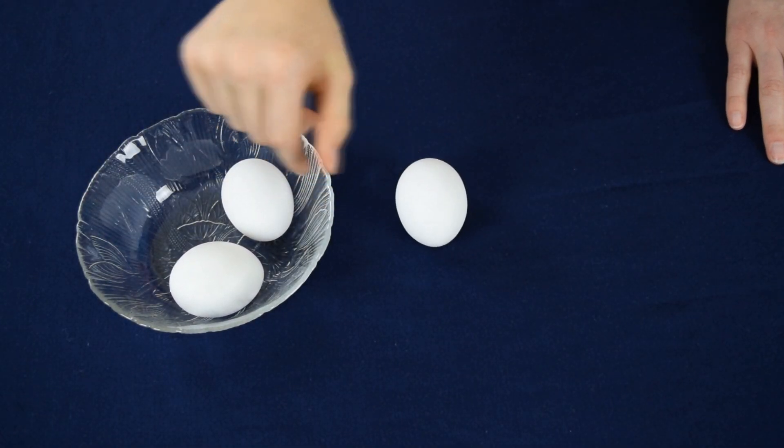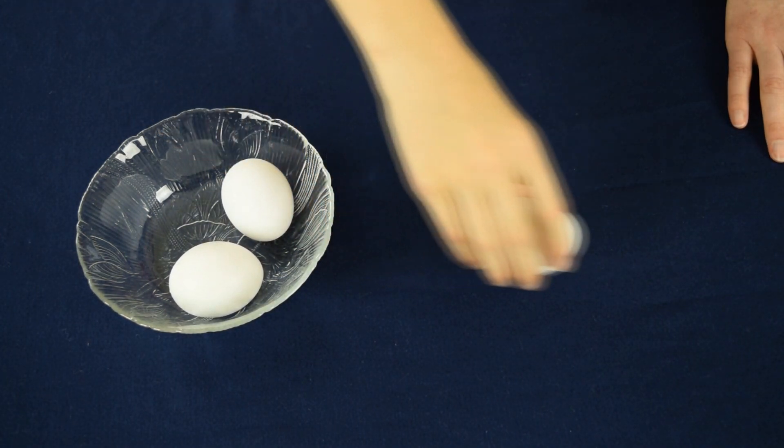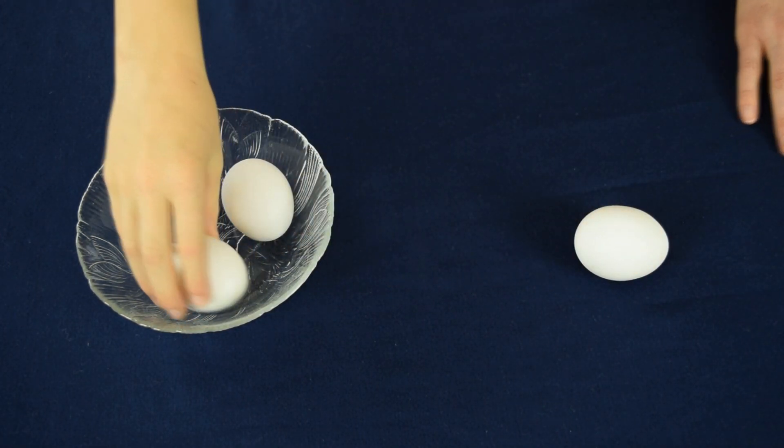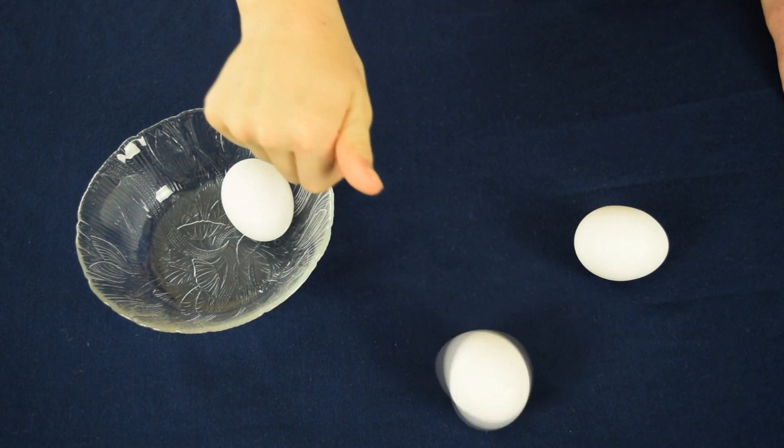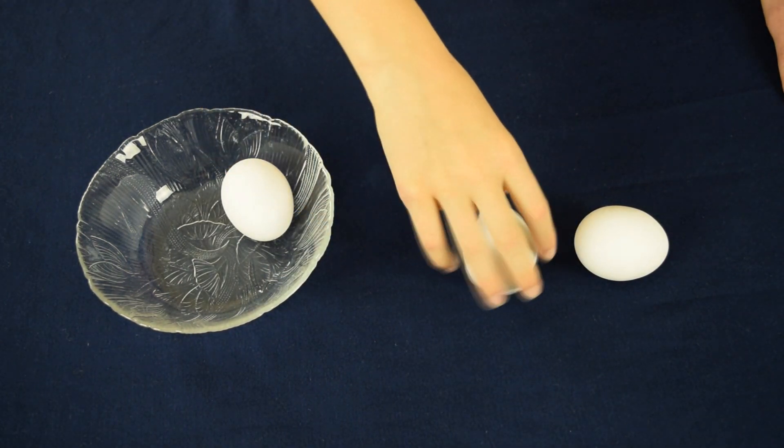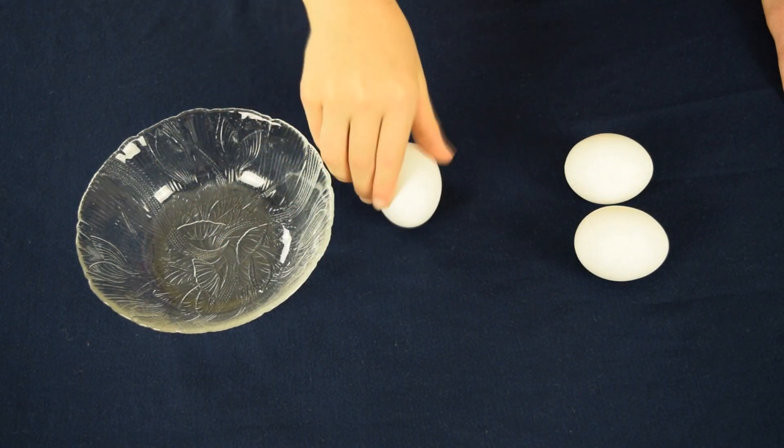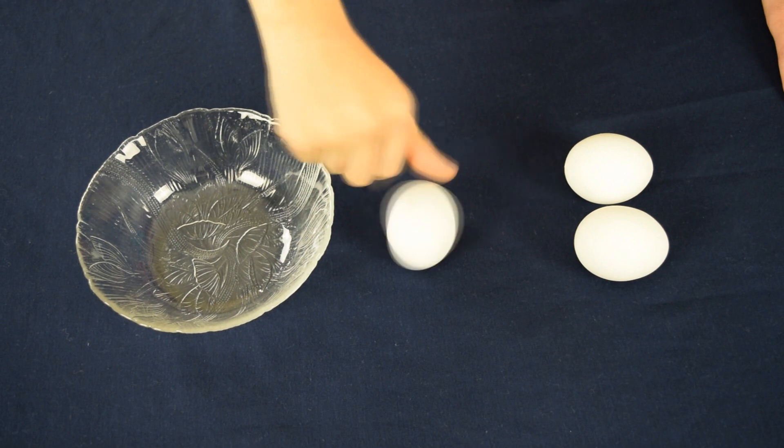See, the first egg that my son takes out of the bowl doesn't spin. For the second egg, you'll see that it does continue to spin. Now let's try the third egg. It again doesn't spin.